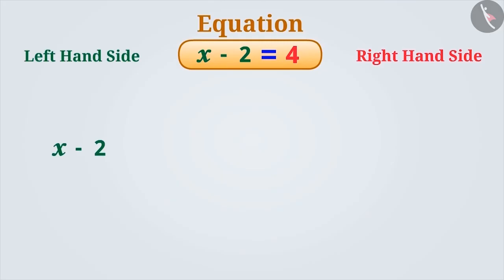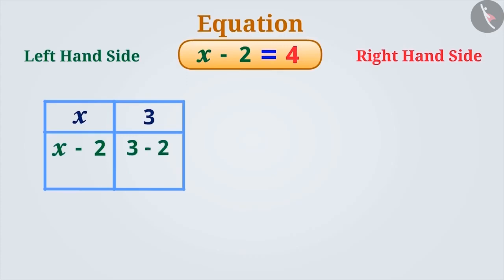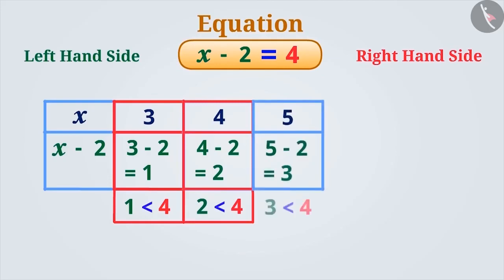Now observe the expression x-2. In this, we can take any value of x. Can we assume any value of x in the equation also? Let's understand this. If we take the value of x as 3, then the left-hand side will be 3-2 equals 1. Is it equal to the right-hand side? No, it's less. That is, the condition of the equation is not satisfied if the value of x is 3. Similarly, even if the value of x is 4 or 5, the condition of the equation is not satisfied.